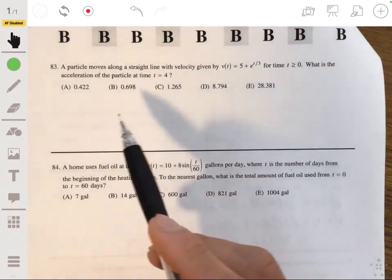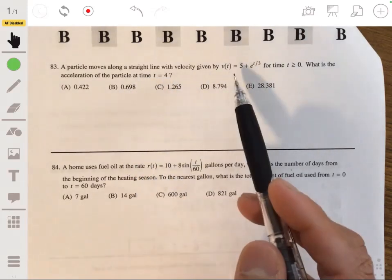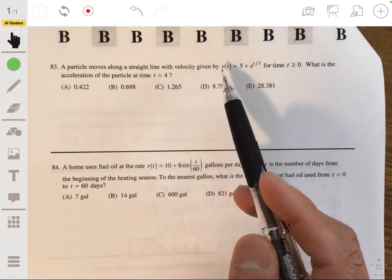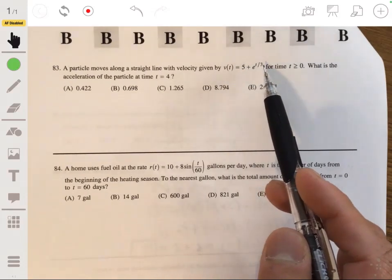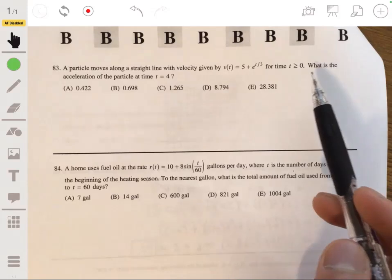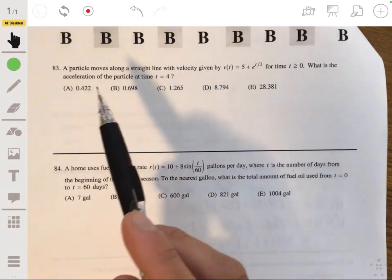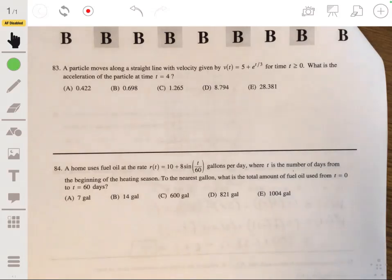Alright, 83. We have a particle that moves along a straight line with velocity given by the equation v(t) equals 5 plus e to the 1/3 t for time t greater than or equal to 0. What is the acceleration of the particle at time t equals 4?